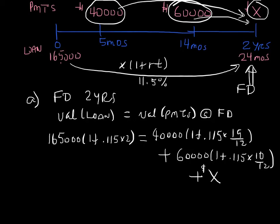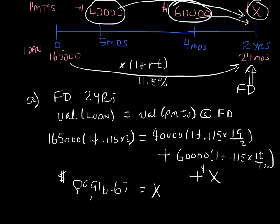Now you have an equation where you solve for X. You need to find the future value of the $165,000, and the future value of the $40,000 and $60,000. Add them up, subtract, and isolate X. You will end up with X equal to $89,916.67, rounded to the nearest penny. Once you know the size of the final payment, you can easily determine the total interest charges — the difference between all the payments and the $165,000 originally borrowed.